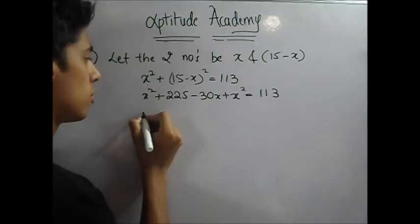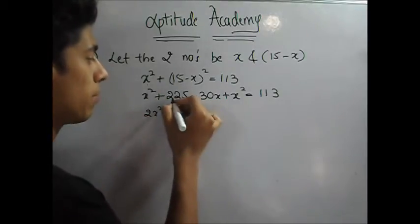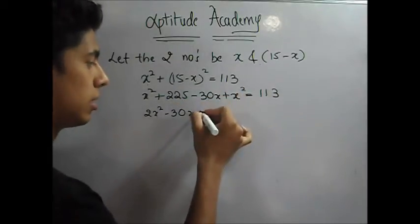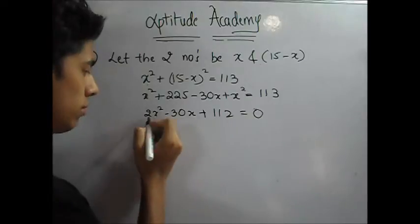So 15 square is 225 minus 30x plus x square is equal to 113. Take 113 from this side. So it becomes 2x square minus 30x plus 225 minus 113. This is 112. Now divide this by 2 because it's common.